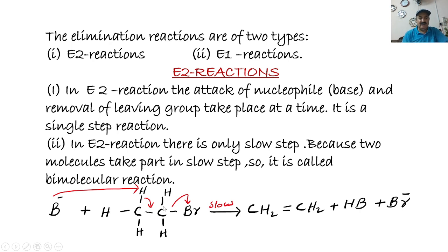This produces CH₂=CH₂ plus HB plus Br⁻. This step is the slow step. In this slow step, two molecules are participating: CH₃CH₂Br and B⁻, which is the base.